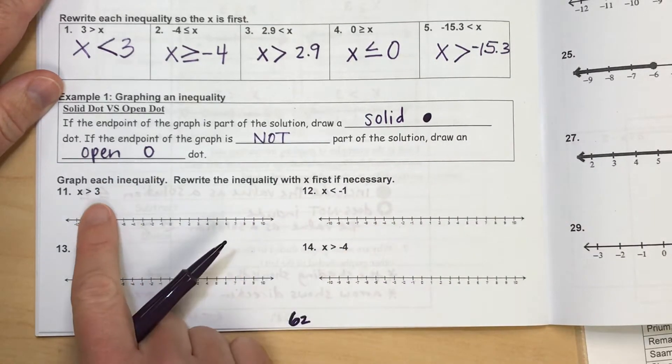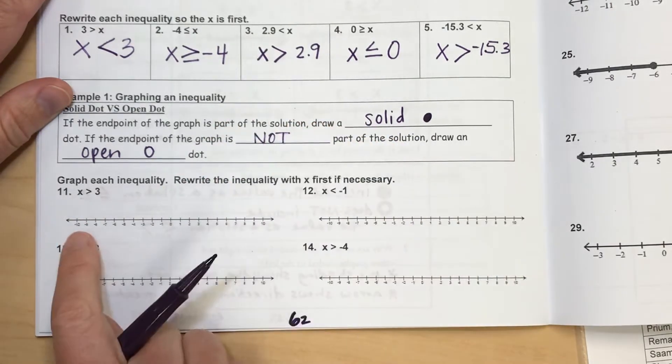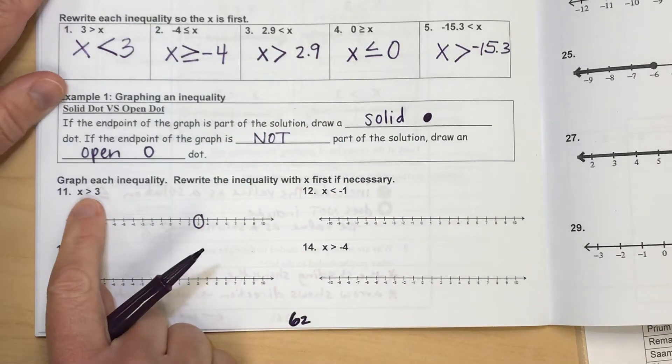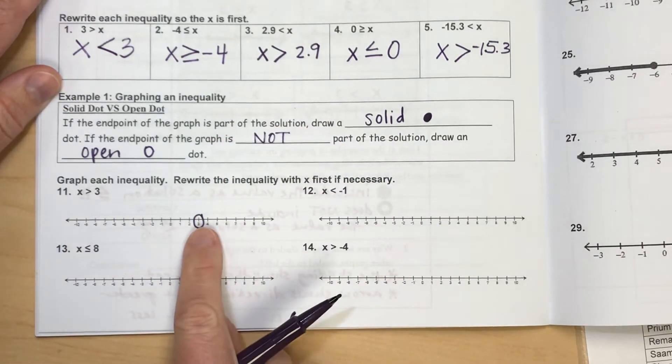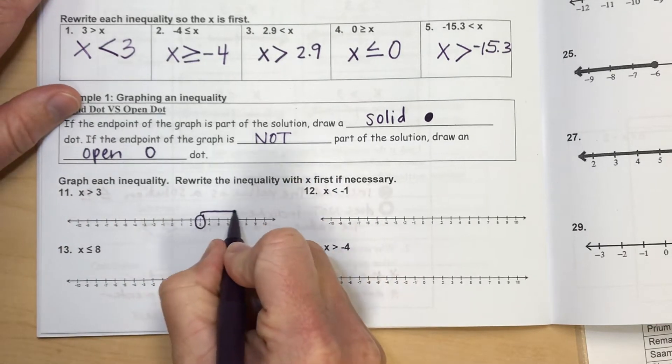So I'll give you a few examples of each of these. For this example, it says x is greater than 3. So I'm going to find on my number line the number 3 and circle it. Now it does not say equal to, so I'm going to leave that open. And x is greater than, so we're going to shade to the right.